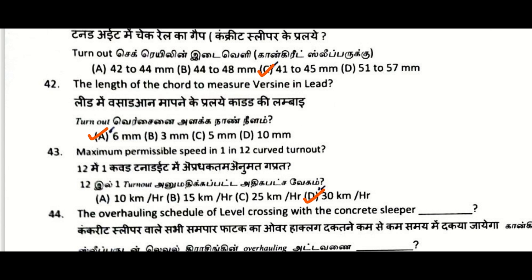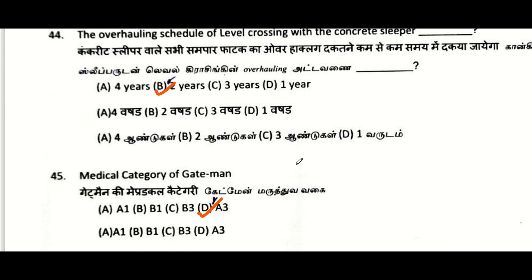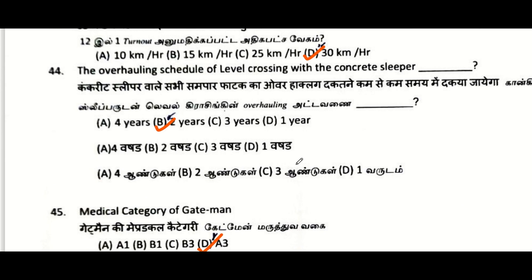Length of the cord to measure the versine in the lead: 6 meters — note this is a defective question, it should be 6 meters. Maximum permissible speed in 1 in 12 curve turnout: 30 kmph. Overhauling schedule of level crossing with concrete sleeper: maximum 2 years.